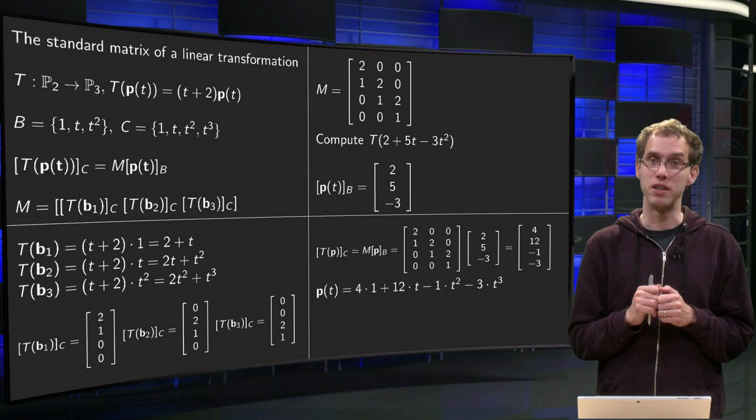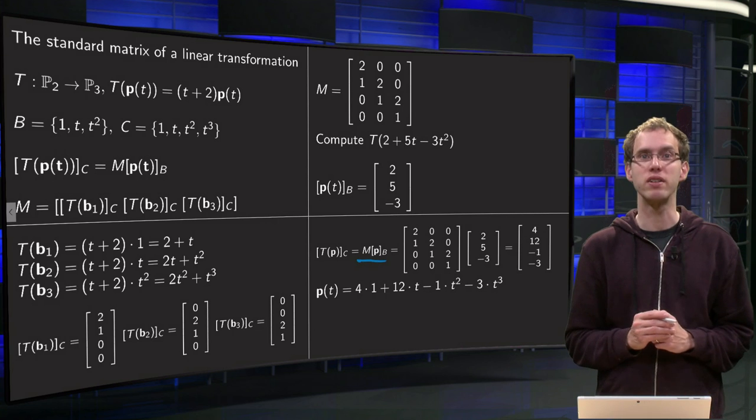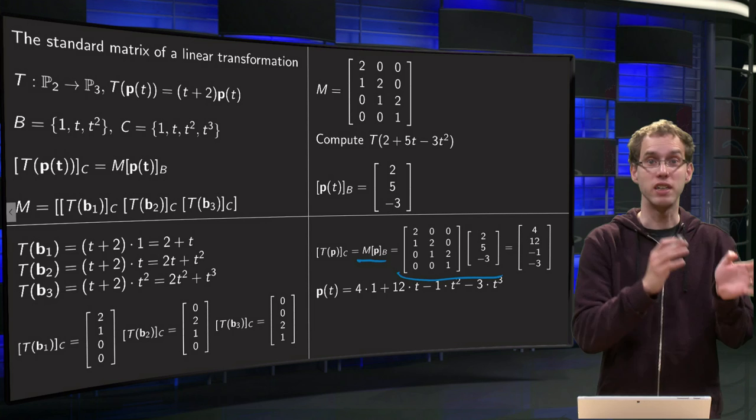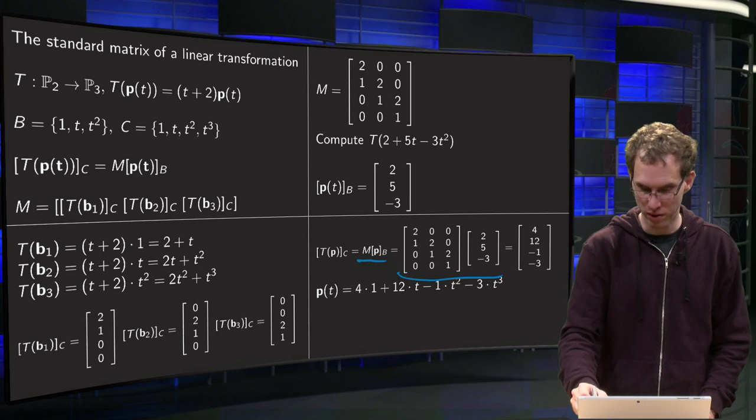And then we can use our M matrix to find the image of p(t) because we know that [T(p)]_C equals M times our coordinate vector. Now we have our matrix M. So this is just matrix times vector. We know how to do that. We get another vector.